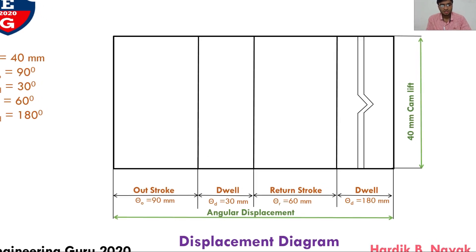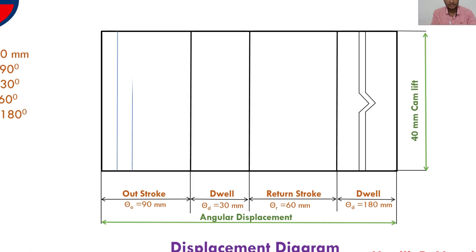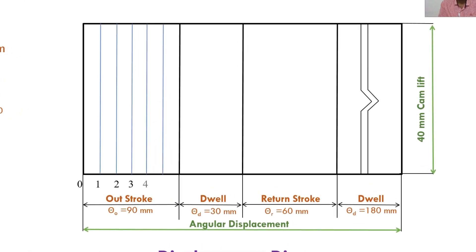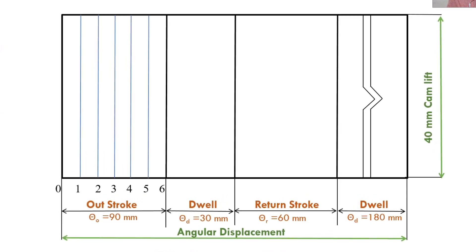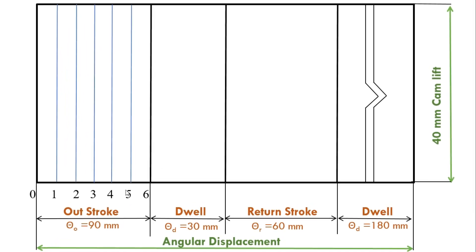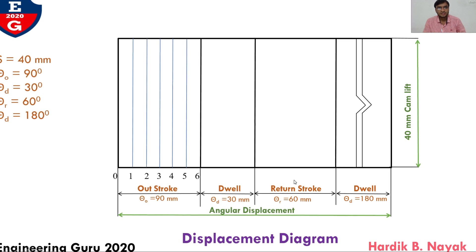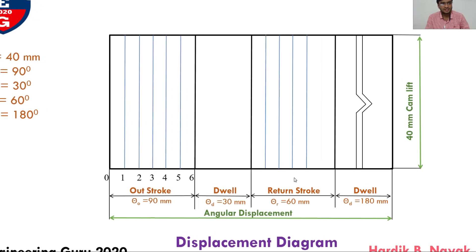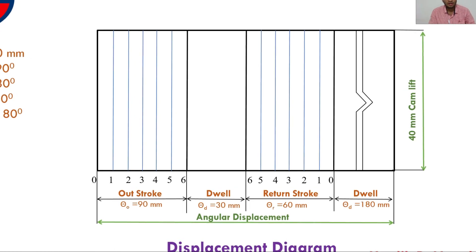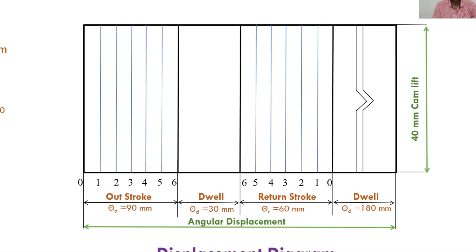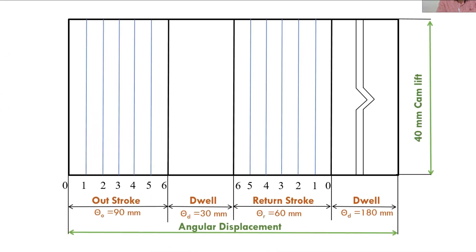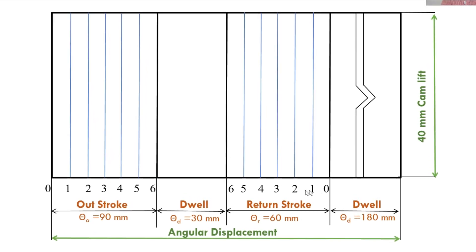Next, divide the outstroke into 6 equal parts, draw projected vertical lines through all points, and give notation from 0 to 6. After this there would be a dwell — the follower goes to rest for 30 degrees. No need to divide during dwell because the follower neither moves upward nor downward. After dwell, there is a return stroke of 60 degrees. Again divide this return stroke into 6 equal parts and draw projected vertical lines. For simplicity, I will keep the same notation in reverse order: 6, 5, 4, 3, 2, 1 and 0.